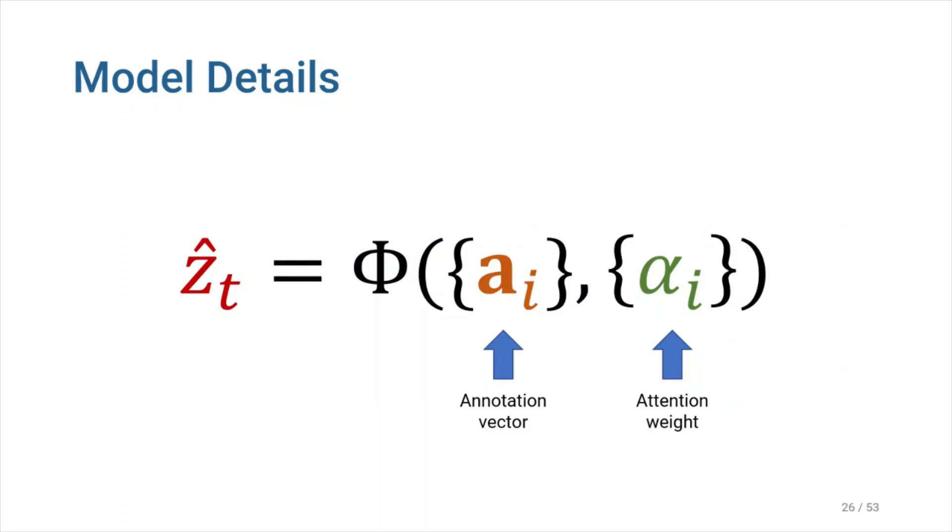Once the weights, which sum to 1, are computed, the context vector Zt is computed by this function, where phi is a function that returns a single vector given the set of annotation vectors and their corresponding weights. Now we shall discuss the details of the phi function in the next chapter.